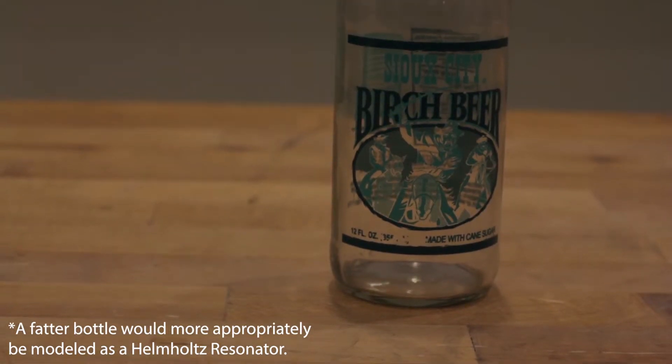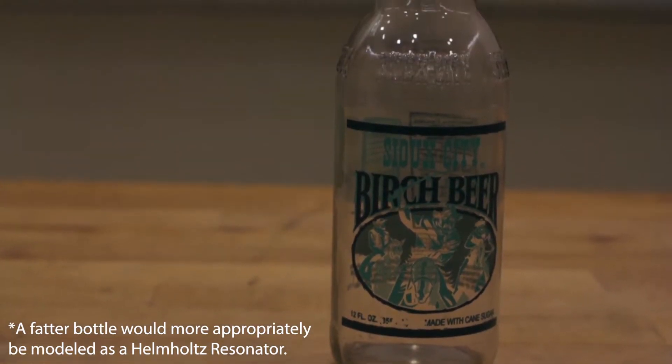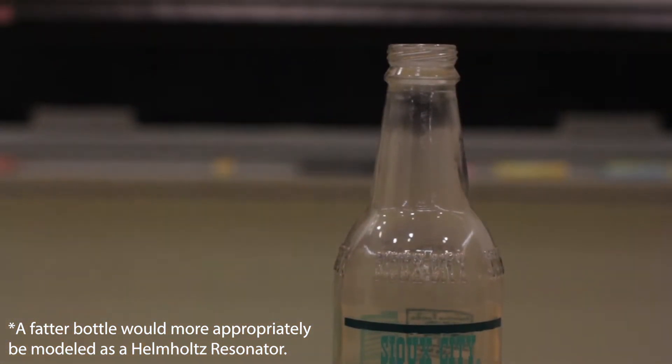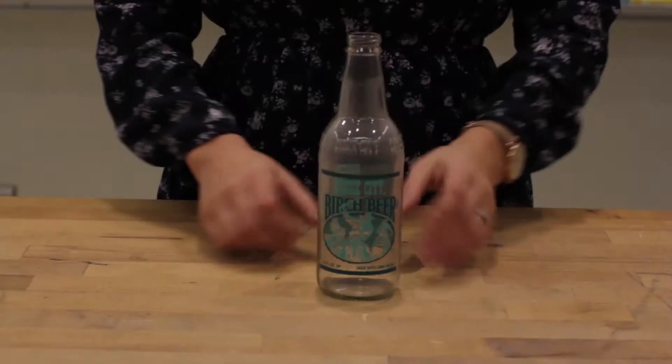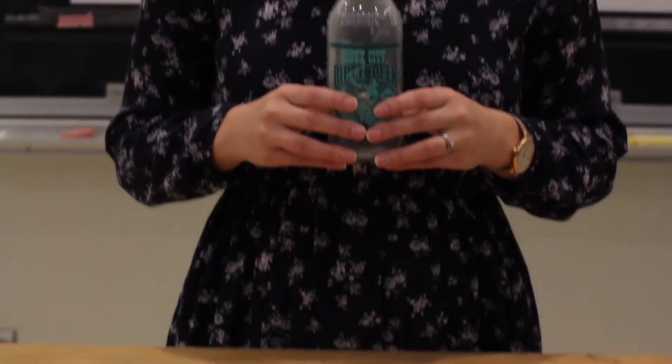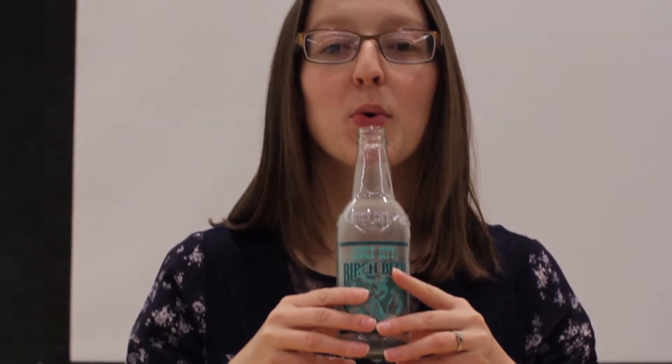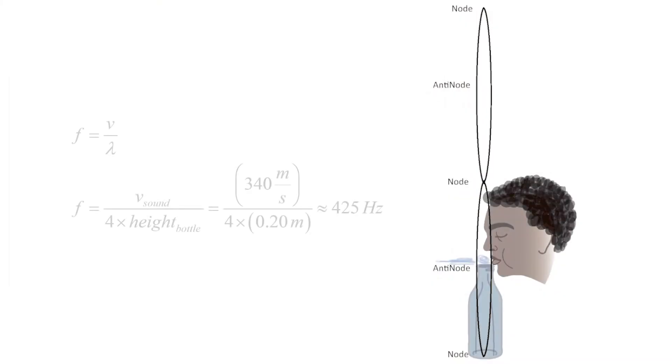Another example of a standing wave is blowing across the top of a skinny pop bottle. The air is free to move at the top of the bottle, an antinode, and cannot move at the bottom of the bottle, a node. The wavelength of the main sound wave produced is four times the height of the bottle. As again, we need to picture a complete cycle of a wave. Since the velocity of sound in air is about 340 meters per second, we could estimate the frequency of the sound produced using the speed equals frequency times wavelength equation.